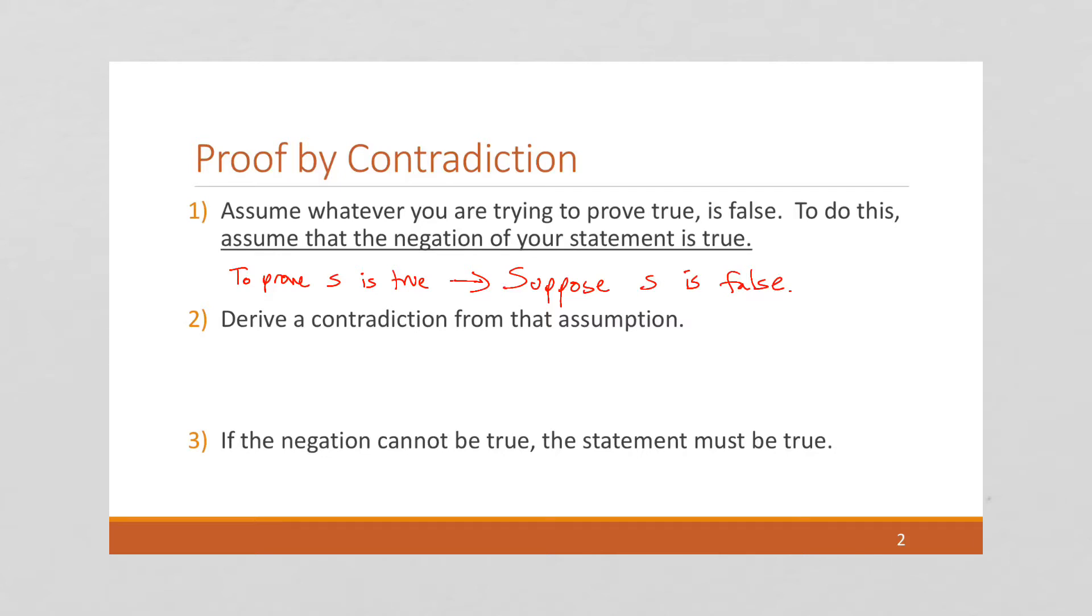Instead, we just know that if we're trying to prove something true, we're going to suppose that it's false. After that, we want to derive a contradiction from that assumption.